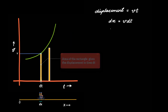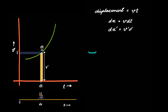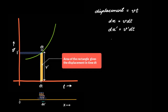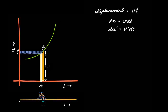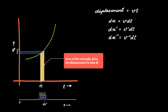We can take another time interval dt adjacent to this one, and let us say the velocity here was v dash. Then again, we can find the displacement in this time as dx dash is equal to v dash times dt, and once again we see that this is nothing but the area of this rectangle. Then take another time period dt adjacent to this one where velocity is v double dash. The displacement in this time period is dx double dash, which is equal to v double dash times dt, which again is the area of this rectangle.